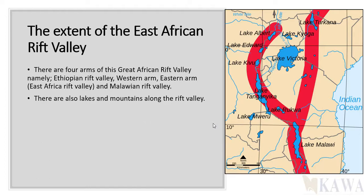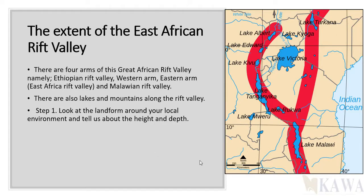There are also lakes and mountains found on the floor and on the sides of the valley. There are many lakes — some are too small to appear in geography books — but you need to know the major ones and name them. The mountains found in the rift valley are called block mountains.